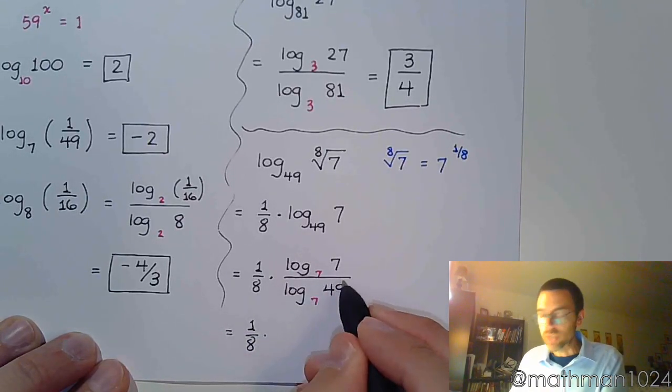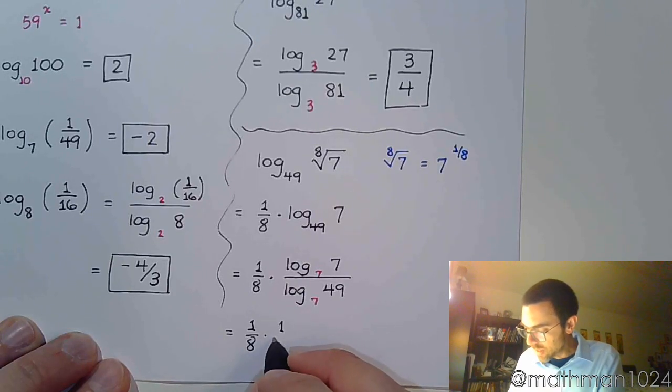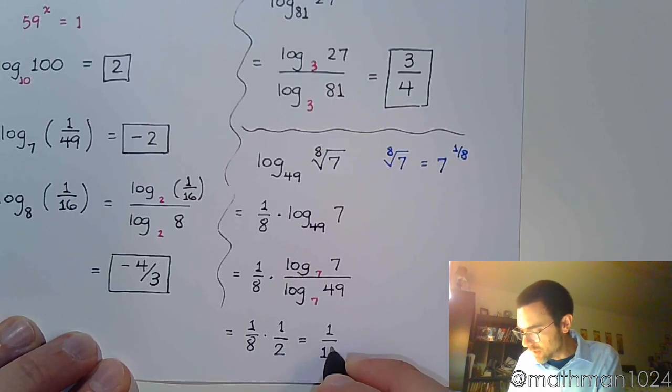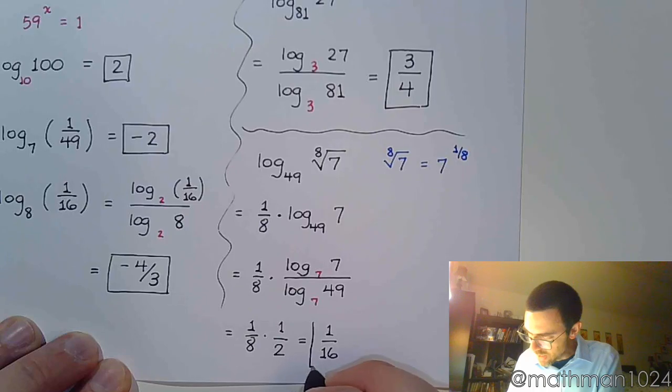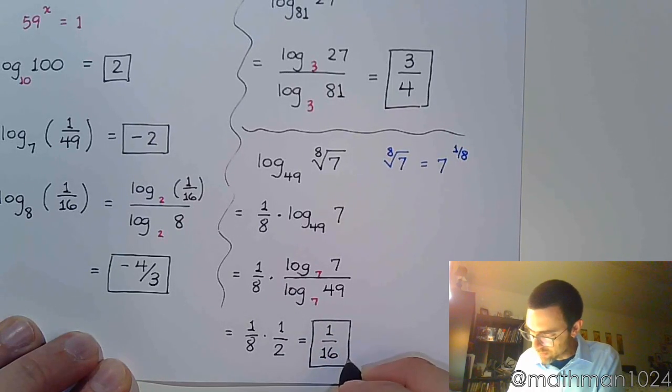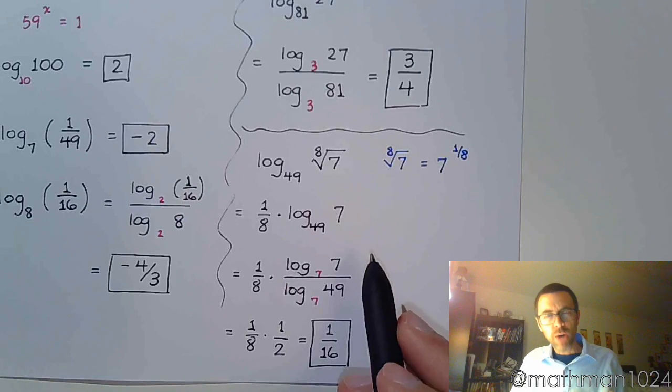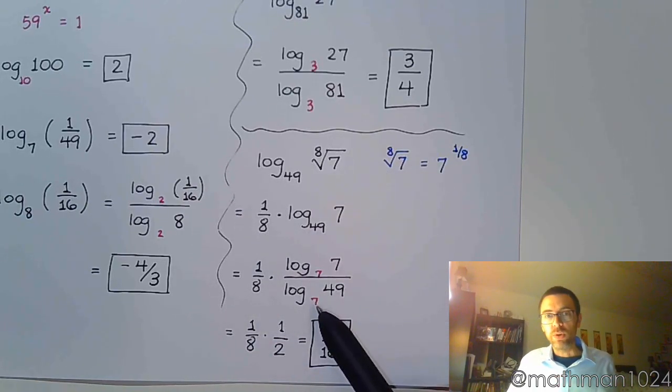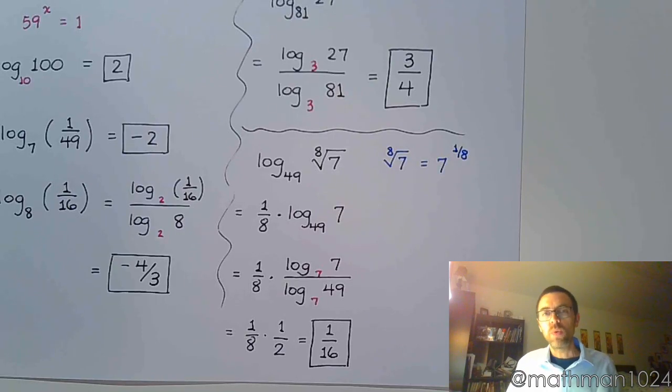So, the power of 7 that gives you 7 is 1. And, the power of 7 that gives you 49 is 2. And, then finish this by doing the multiplication. And, we have 1 over 16. So, we used that property of logarithms to bring the power out in front. And, then we did change of base theorem. And, we made very quick work of this.